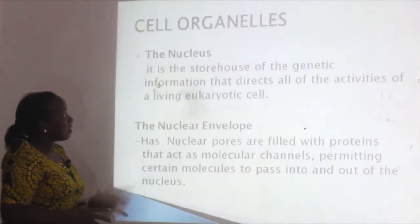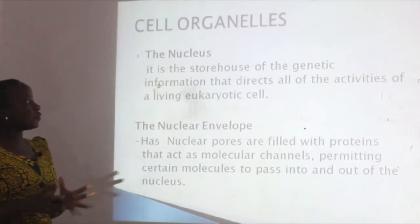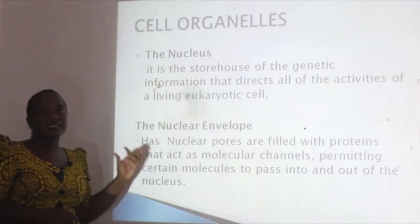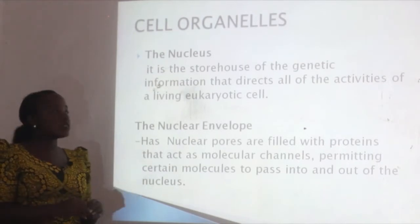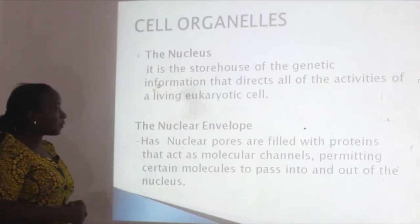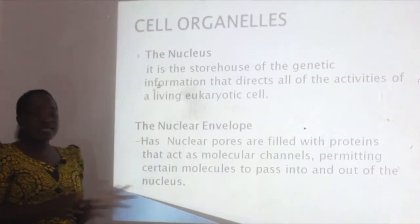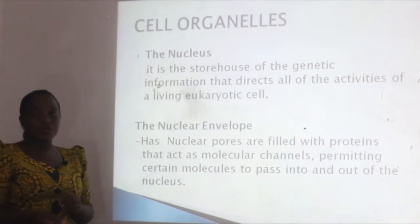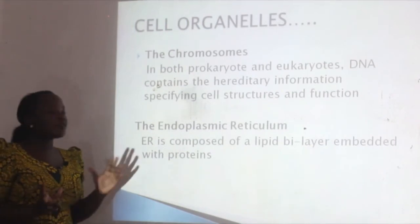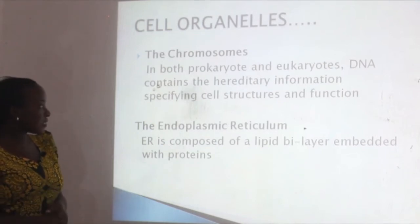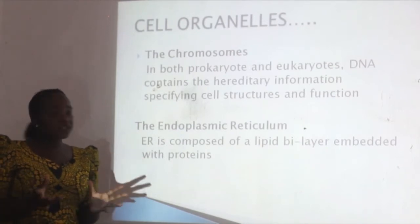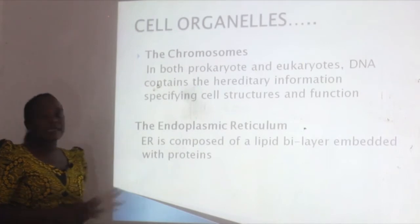Now let's look at the cell organelles. The first one is the nucleus. The nucleus is the storehouse of genetic information that directs all the activities of a living eukaryotic cell. The nucleus is only found in eukaryotic cells and controls all the activities of the cell. Another organelle is the nuclear envelope, which has nuclear pores filled with proteins that act as molecular channels, permitting molecules to pass into and out of the nucleus. Chromosomes are found in both prokaryotic and eukaryotic cells, and inside chromosomes there is DNA which contains hereditary information specifying cell structure and functions.